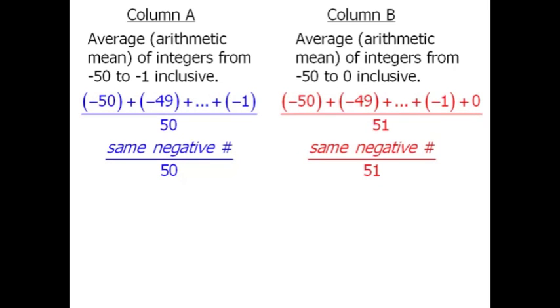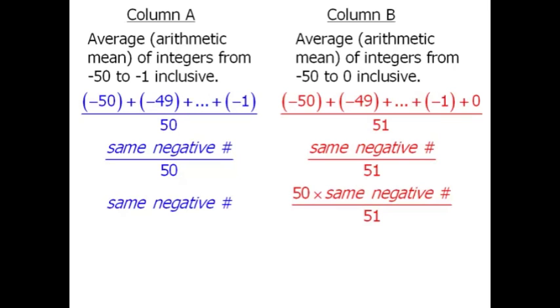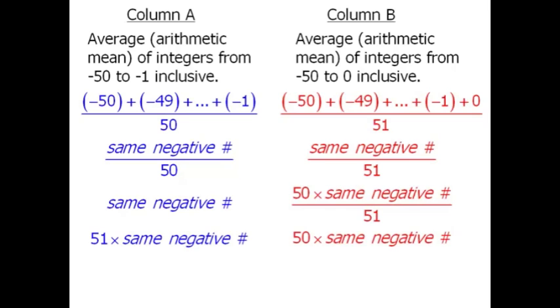At this point, I want to eliminate our fractions by first multiplying both columns by 50, and now we'll multiply both columns by 51.